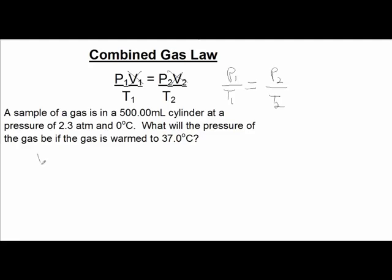Now, P₁ we could define as 2.3 atmospheres. And T₁, converting our Celsius to Kelvin, is 273 Kelvin. And our P₂ is the unknown. And T₂ is 273 plus 37, which is 310 degrees Kelvin.